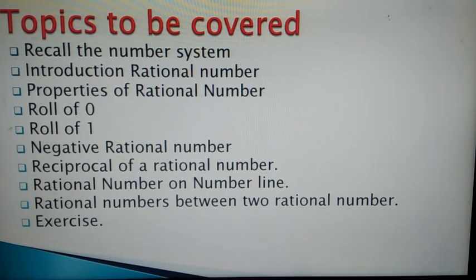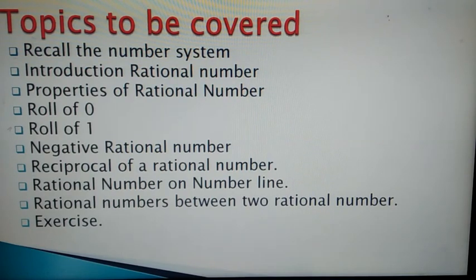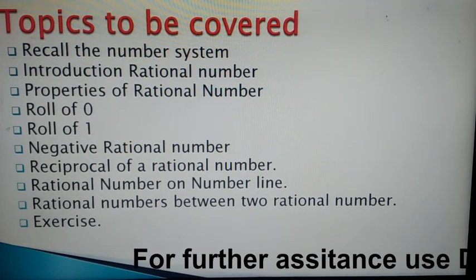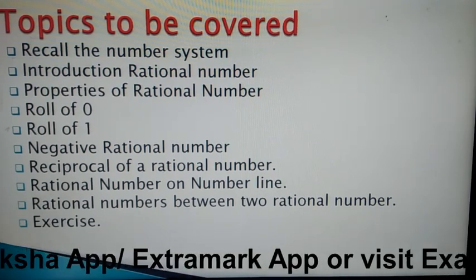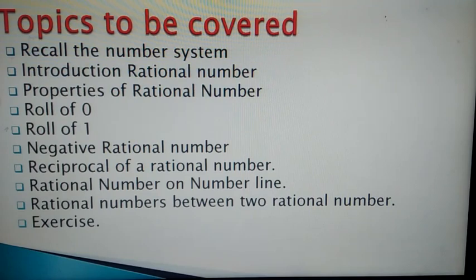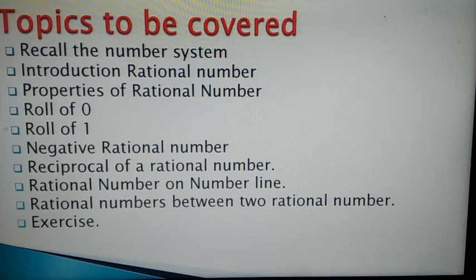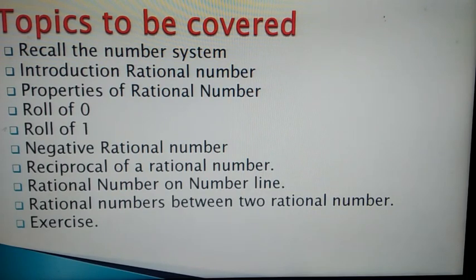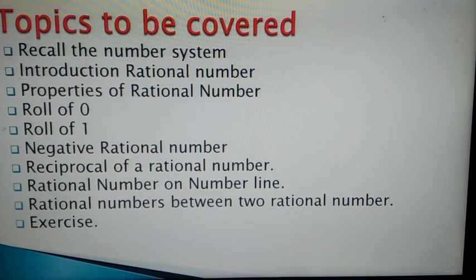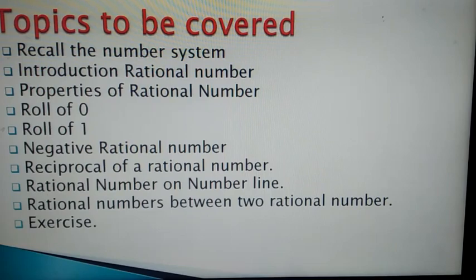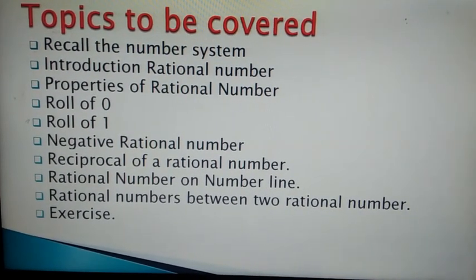The topics we are going to cover here: first we will recall the number system — natural numbers, whole numbers, and integers. Then we will learn what are rational numbers, discuss the properties of rational numbers, the role of zero and one with rational numbers, negative rational numbers, reciprocal, how to plot rational numbers on a number line, and how to find rational numbers between two given rational numbers.